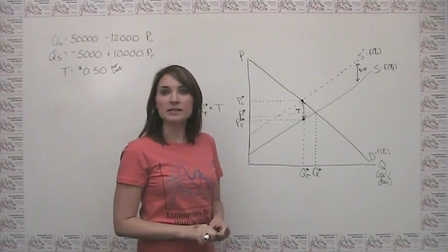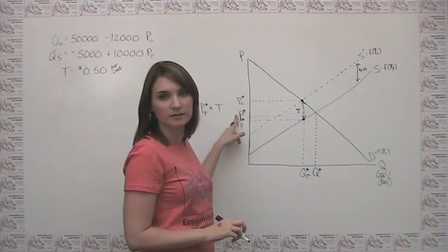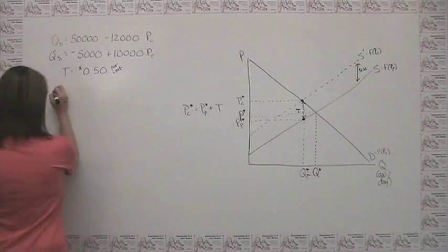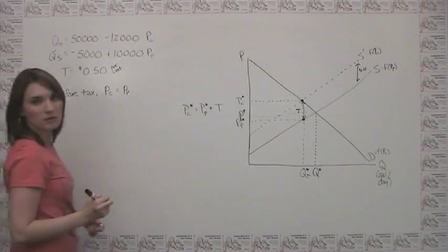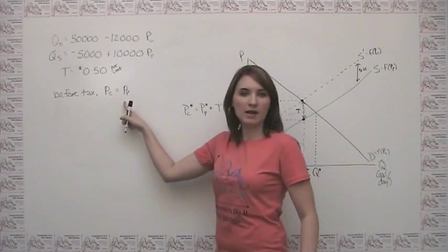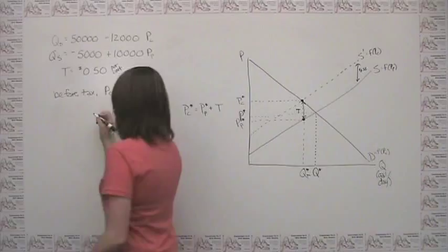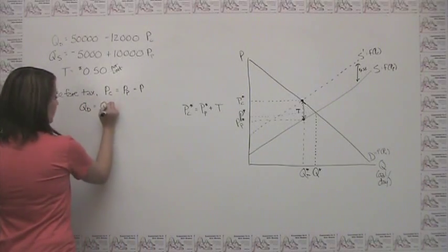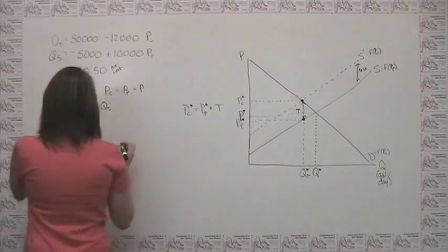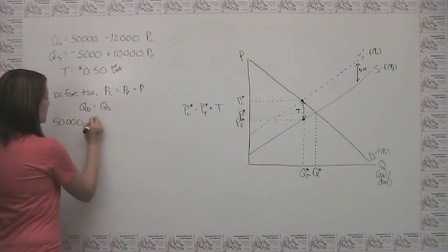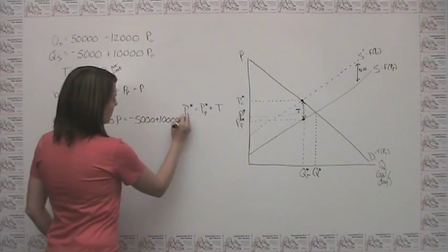The first thing we can do is solve for the original pre-tax quantity and price. Before the tax, the price to the consumer and the price to the producer are the same, so we really only have one relevant price — let's call that P. In equilibrium, quantity demanded and quantity supplied have to be the same, so we can set them equal: 50,000 minus 12,000 times P equals negative 5,000 plus 10,000 times P.